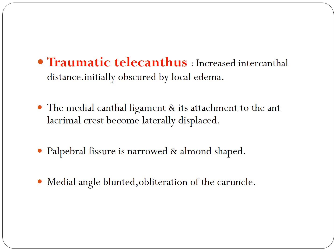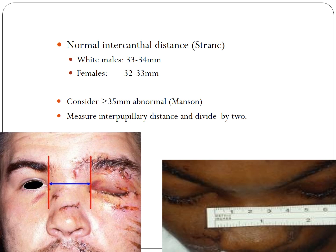The normal intercanthal distance is 33–34 mm in white males and 32–33 mm in females. An intercanthal distance greater than 35 mm is called traumatic telecanthus. Because direct measurement is difficult, we measure the interpupillary distance — the distance between the two pupils with the patient looking straight ahead — divide it by two, and if the resulting value exceeds 35 mm, it is diagnosed as traumatic telecanthus.